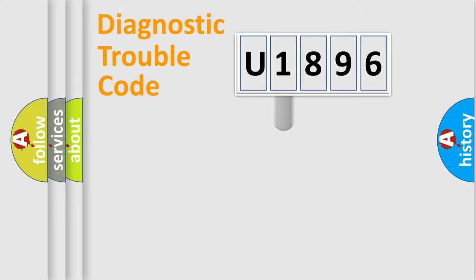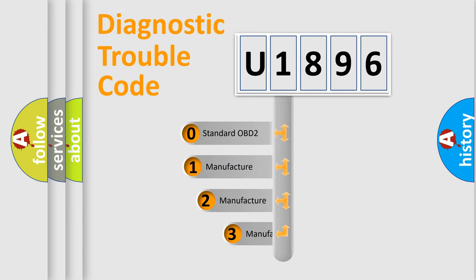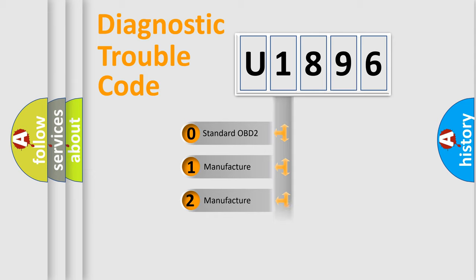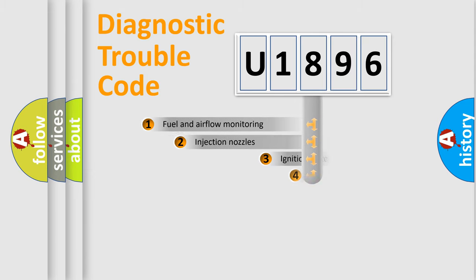This distribution is defined in the first character of the code. If the second character is expressed as zero, it is a standardized error. In the case of numbers 1, 2, or 3, it is a more specific expression of a car-specific error.